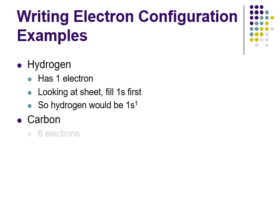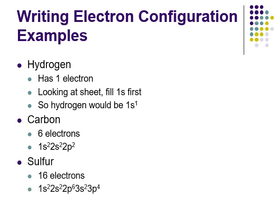Carbon has six electrons. Filling out the table: two go into 1s, two into 2s, two into 2p — giving 1s²2s²2p². A way to check yourself is to add up all your superscripts; they should equal the number of electrons present. Sulfur has 16 electrons, giving: 1s²2s²2p⁶3s²3p⁴. Two electrons in 1s, two in 2s, six in 2p, two in 3s, and four in 3p.